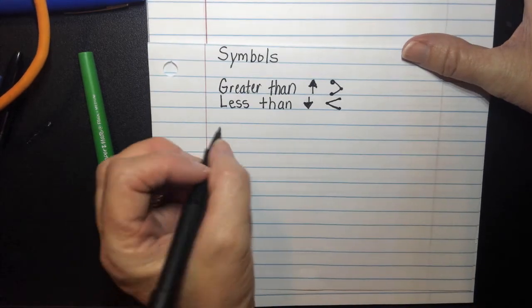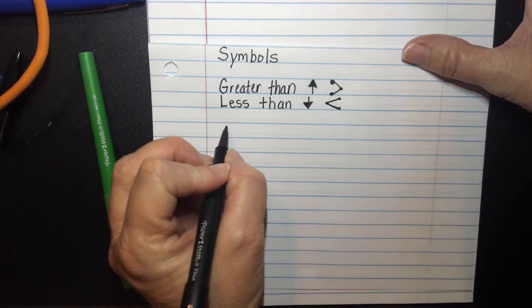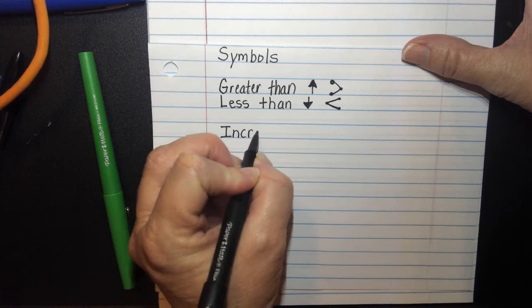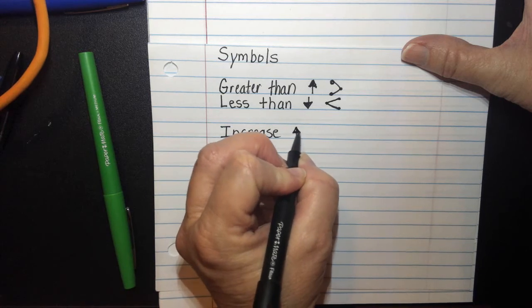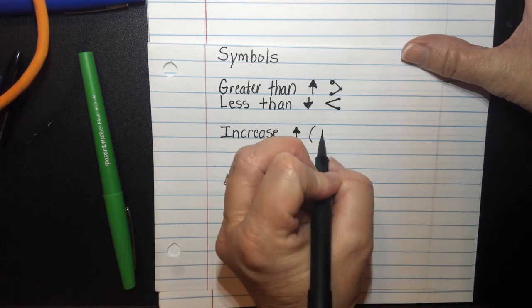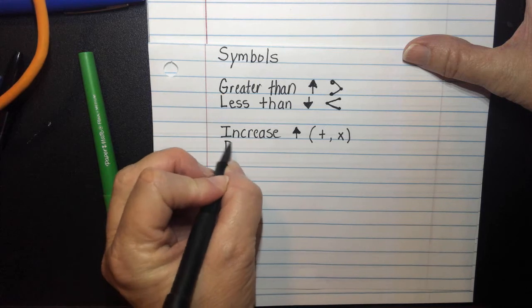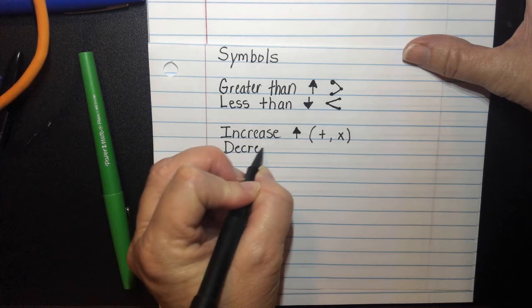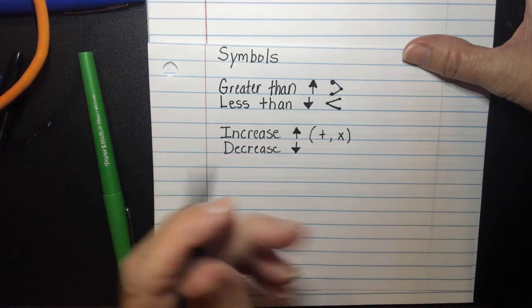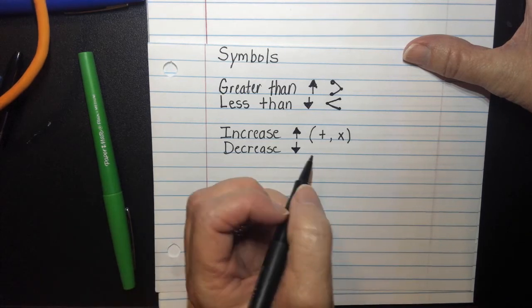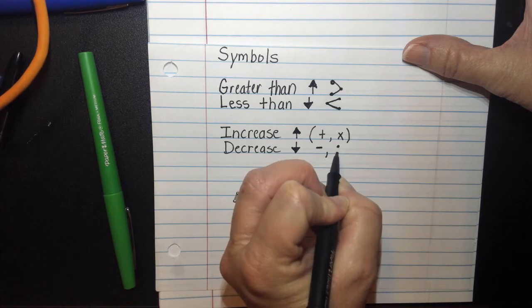Two other words that we associate with different actions or operations would be the words increase. And we have increase. That means we're getting bigger. And typically the actions that go along with that are adding actions or even multiplying actions. Sometimes we will see the word decrease. And so we just have to remind ourselves that decrease means that we're getting smaller on our number line or on our thermometer. And two actions that typically go along with that would be subtracting and then dividing actions.